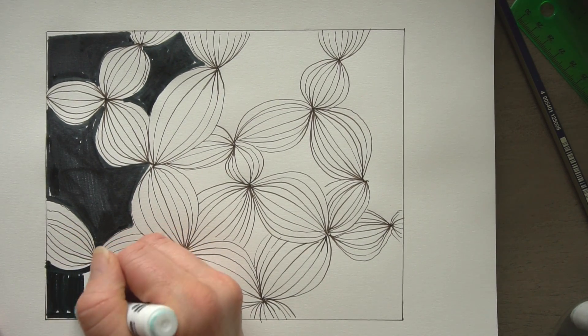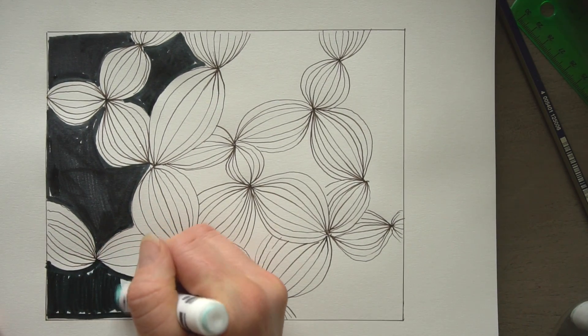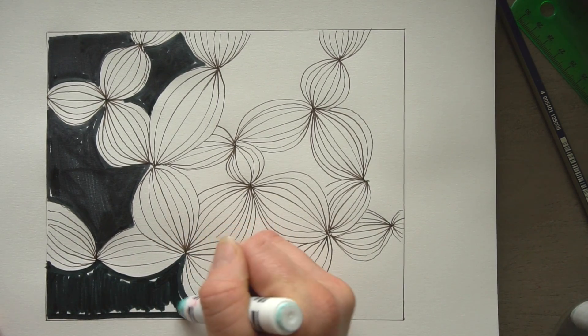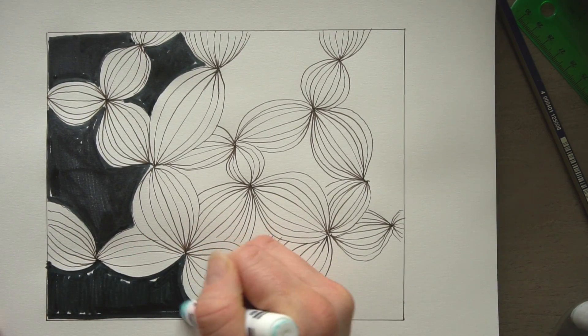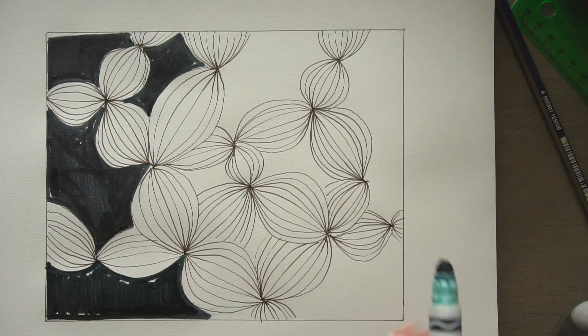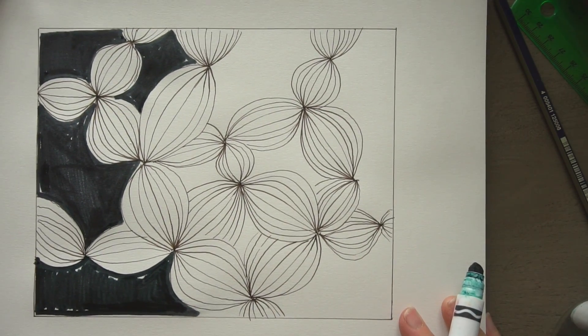But yeah, I'm totally using a Crayola marker. What would be cool is to fill the background in with lines too. So you can kind of see both sides.